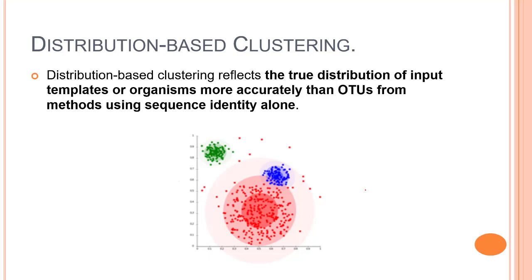Distribution-based clustering is based on how your data is distributed. This approach assumes the data is composed of some sort of distribution, probably a Gaussian distribution. As the distance from the distribution center increases, the probability that a point belongs to that distribution decreases. Points nearest to the centers have the maximum probability of belonging to that cluster, while the furthest points have lower probability.